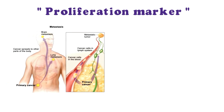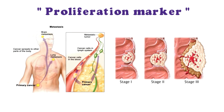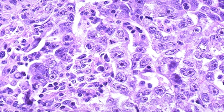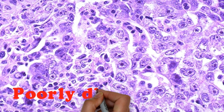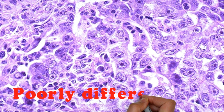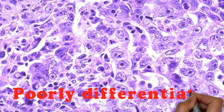Clinically, ki-67 has been shown to correlate with metastasis and clinical stages of tumor. Also, it has been shown that ki-67 expression is significantly higher in malignant tumors with poorly differentiated tumor cells.